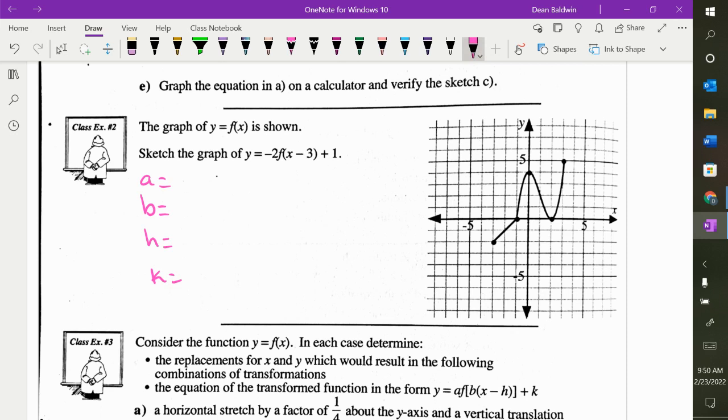What's our a value? Negative two. That does two things. What does it do? Vertical stretch by two. What does the negative do? Flip over the x. What's my b value? One, which doesn't do anything. What's h? h is three, so we go right. And k is negative five, so we go down.